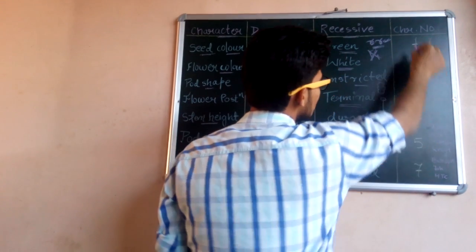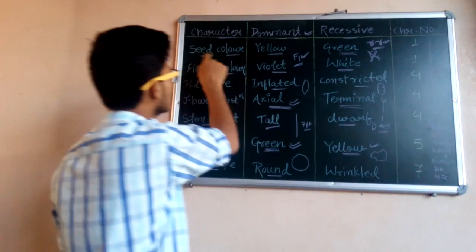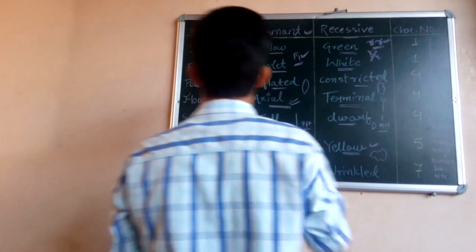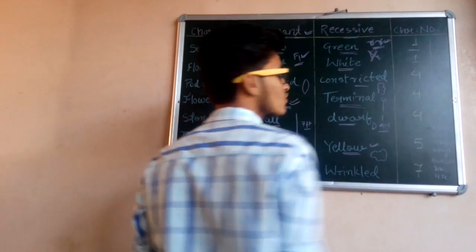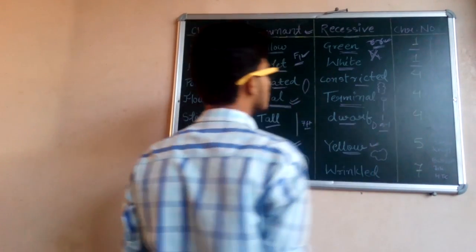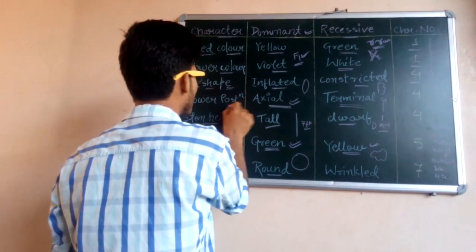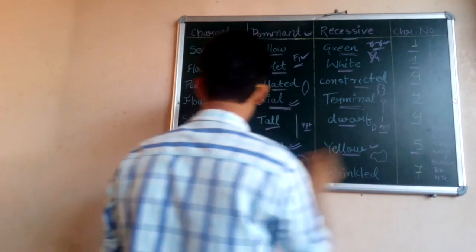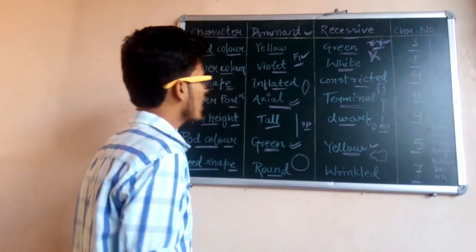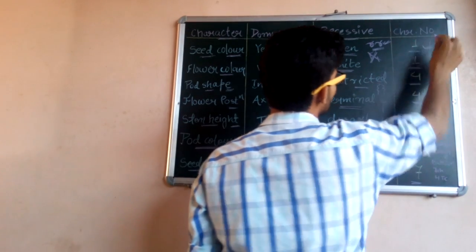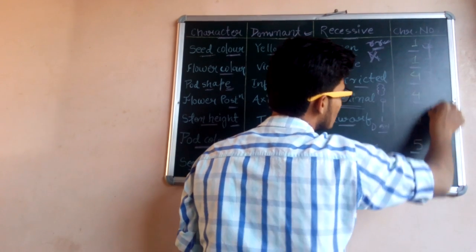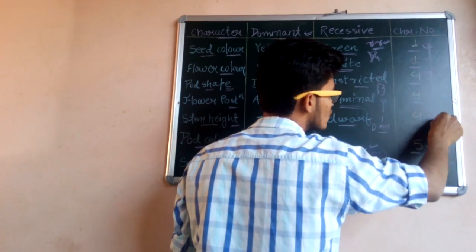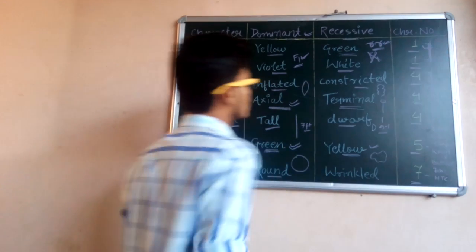What is not given in NCERT are the chromosome numbers of Pisum sativum on which each particular character is located. I have arranged them in increasing order: seed color is on chromosome 1, flower color is also on chromosome 1, pod shape is on chromosome 4, flower position on chromosome 4, stem height on chromosome 4, pod color on chromosome 5, and seed shape on chromosome 7. So chromosome 4 has the maximum — three characters — and chromosome 1 has two characters.